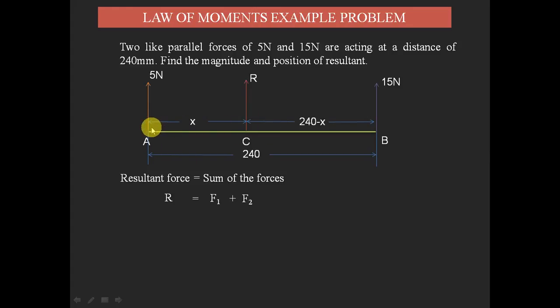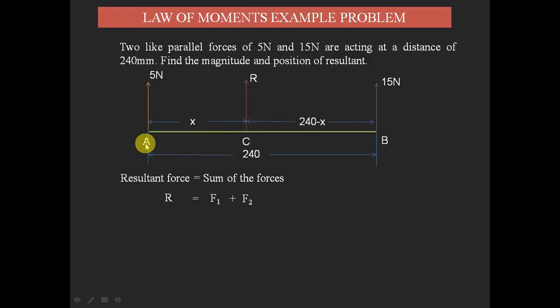Next, we find the position of the resultant — that is, the distance from point A to point C. By applying the law of moments: the sum of the anti-clockwise moments is equal to the sum of the clockwise moments. We take the moment about point C for the two forces.